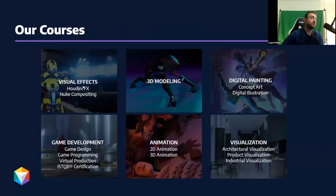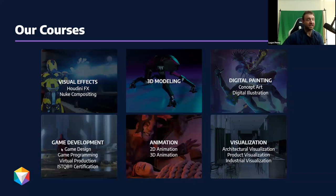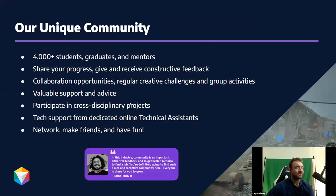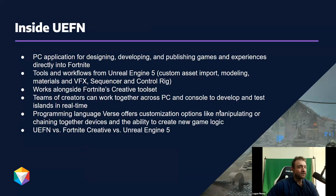The courses CG Spectrum offers include visual effects with Houdini and Nuke, 3D modeling, digital painting, concept art, digital illustration, architectural visualization, animation, game development, and real-time — which is what we're here for. I'm one of 170 mentors around the world. We have a really unique community with over 4,000 graduates and mentors constantly sharing progress, updates, and collaborations.